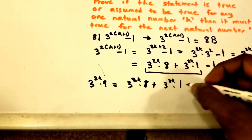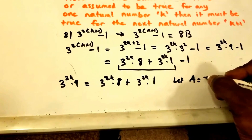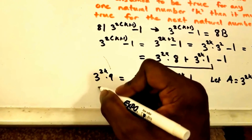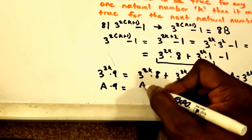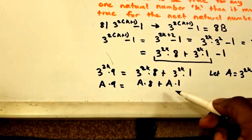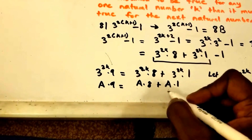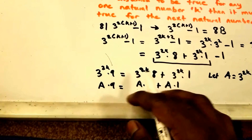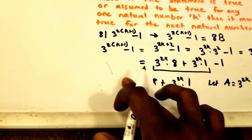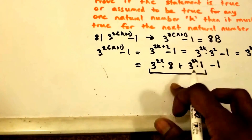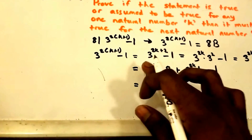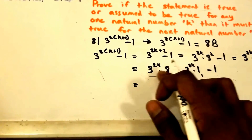To see how that works, let a equal 3 to the 2K. Then a times 9 equals a times 8 plus a times 1. So you can see how those are equal — that's probably one of the trickiest parts of this problem.